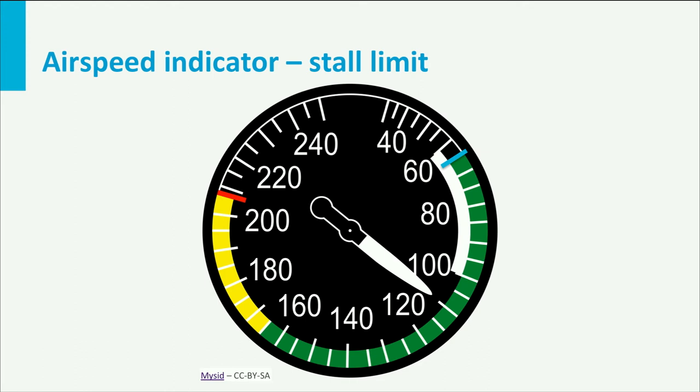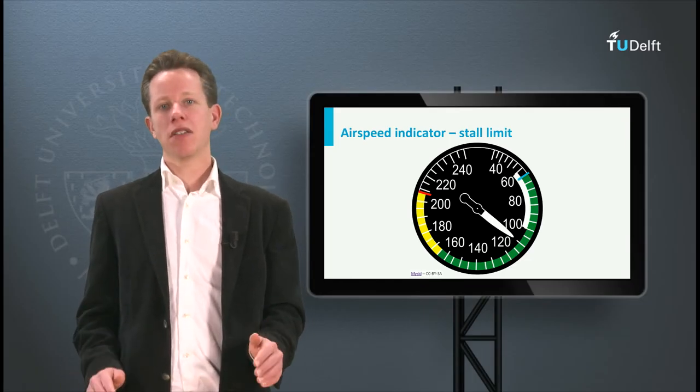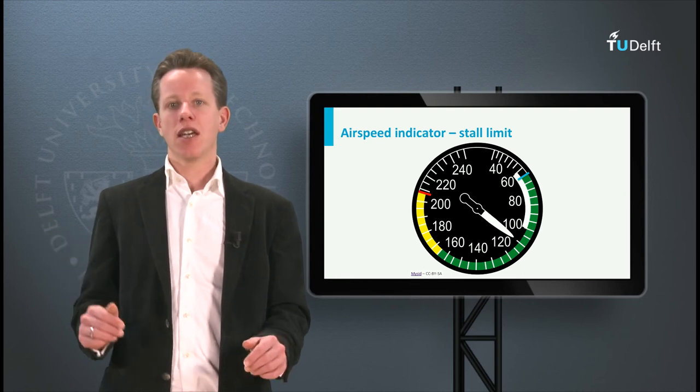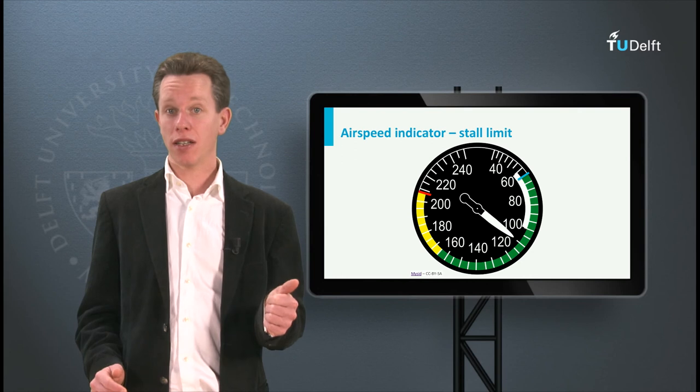On such a dial, the limit, indicated by the lower bound of the green bar, is always indicated for the worst case condition, maximum aircraft weight. So if the pilot stays above this limit, he or she will always be clear of the stall speed. That is quite nice, isn't it?